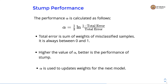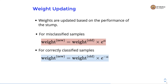Alpha is used to update weights for the next model. The weights are updated based on the performance of the stump. For misclassified samples the new weights are updated by multiplying the old weights by e raised to alpha. For correctly classified samples we update the new weights by multiplying the old weights by e raised to minus alpha. Note that misclassified samples are assigned higher weights than correctly classified samples.